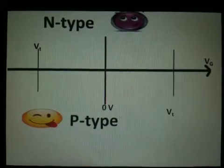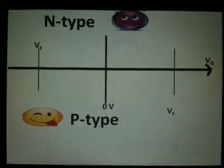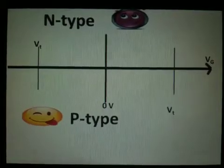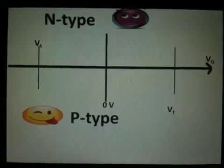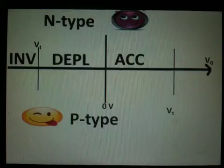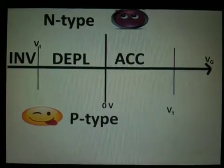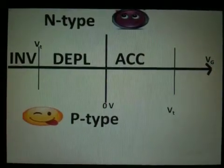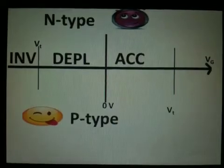Distributing the letters of each of their names will help us remember the order of the biasing regions. For N-type, we will have inversion, depletion, and accumulation. That would be for our character Nita.